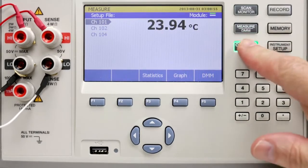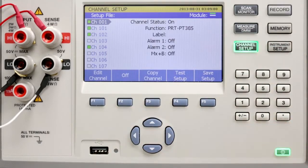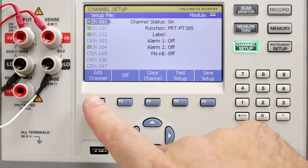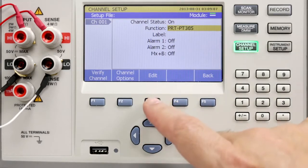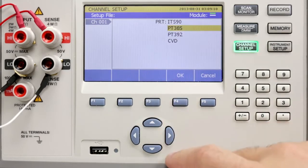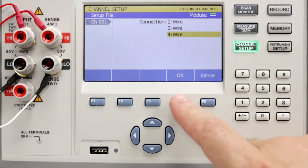Press channel setup. Set channel 1 to on. Select edit channel. Set function to PRT. We'll choose PRT PT385. Set the resistance value to 100 ohms and choose 4-wire PRT.